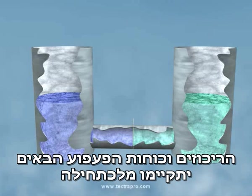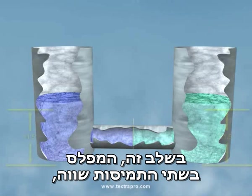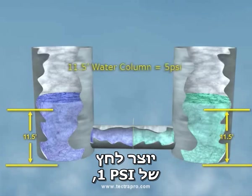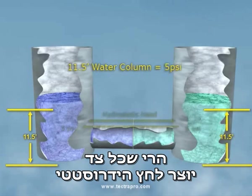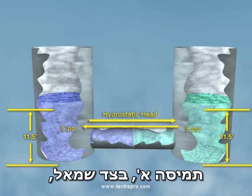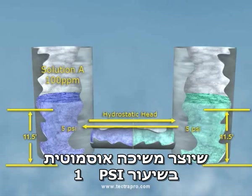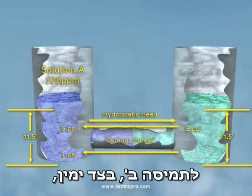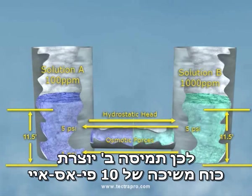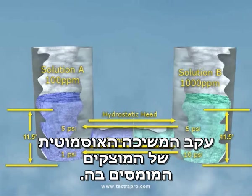In this new example, the following concentrations and osmotic forces will exist initially due to osmotic pressures alone. The level of both solutions is equal at 11.5 feet. Since every 2.3 feet of water column height exerts a pressure of 1 PSI, each side exerts a hydrostatic force of 5 PSI. Solution A, on the left side, has a concentration of 100 ppm of dissolved sodium chloride, causing a 1 PSI osmotic attraction. Solution B, on the right side, has a concentration of 1,000 ppm of dissolved sodium chloride, exerting an attractive force of 10 PSI due to the osmotic attraction of its dissolved solids.